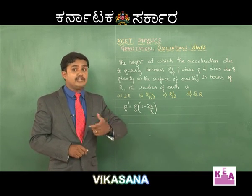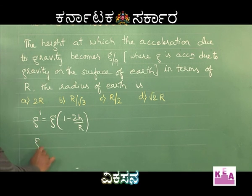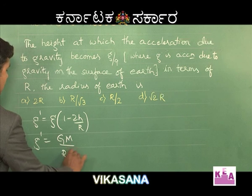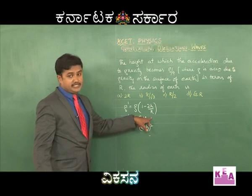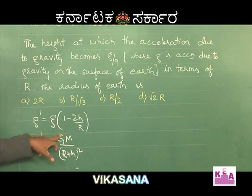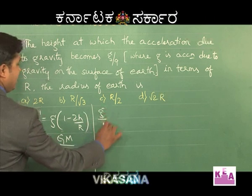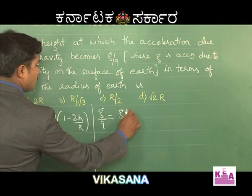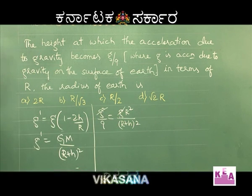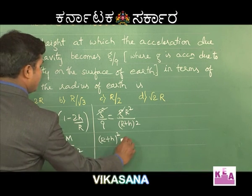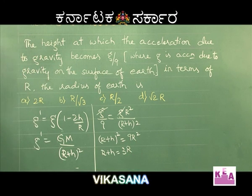When the height is considerable, you must go back to the exact formula: G-dash = GM divided by (R + H) squared. Substituting G-dash = g/9 and replacing GM with gR², we get: g/9 = gR²/(R + H)². After cancelling g, we have 9R² = (R + H)², so R + H = 3R, giving H = 2R.